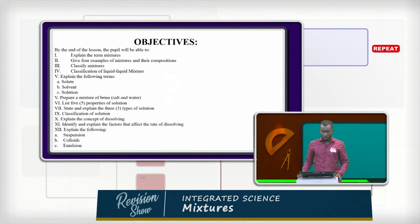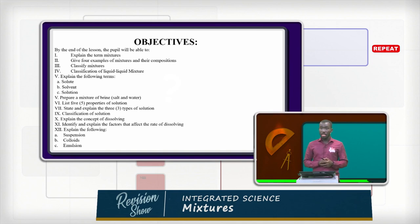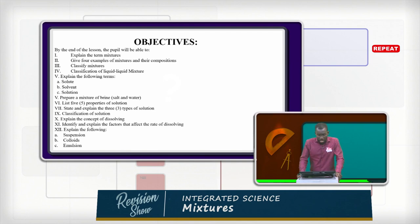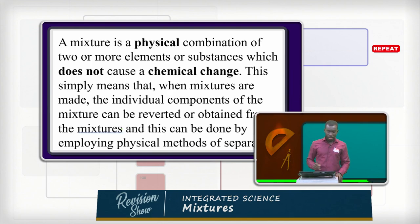The fourth objective is classification of liquid-liquid mixture. The fifth is to explain the following terms: solute, solvent, and solution. We'll also go through how to prepare a mixture of brine — that is salt and water — list five properties of solution, state and explain the three types of solution, classification of solution, explain the concept of dissolving, identify and explain the factors that affect the rate of dissolving, and explain suspension, colloids, and emulsion. Just get glued to your seats because it's going to be fun — let's go.